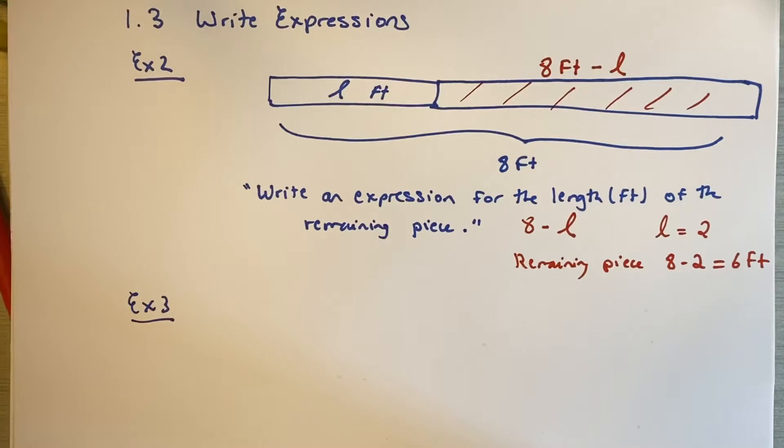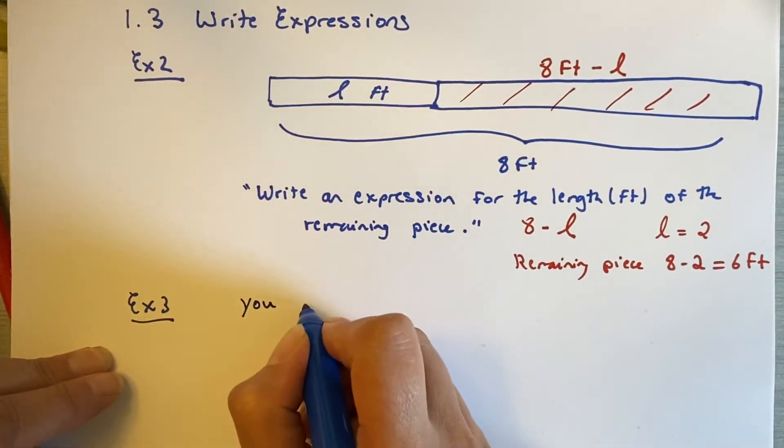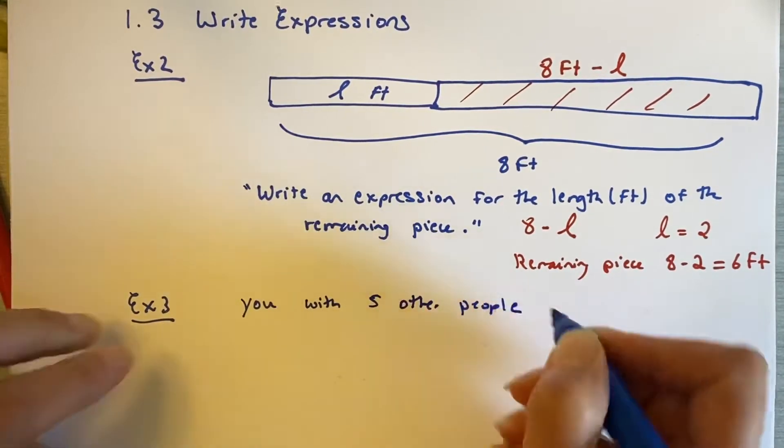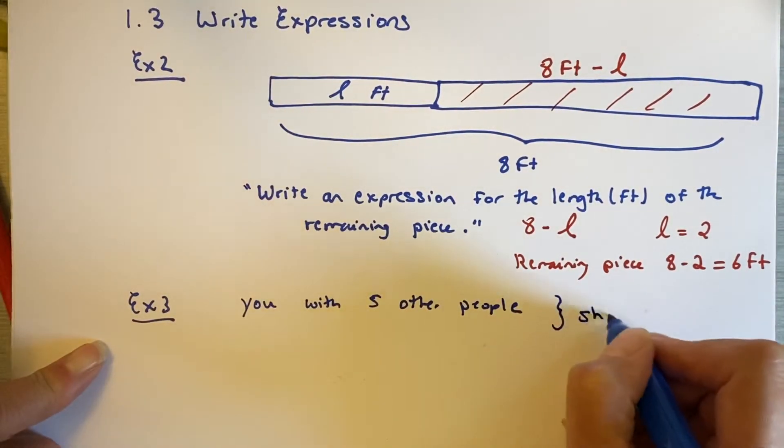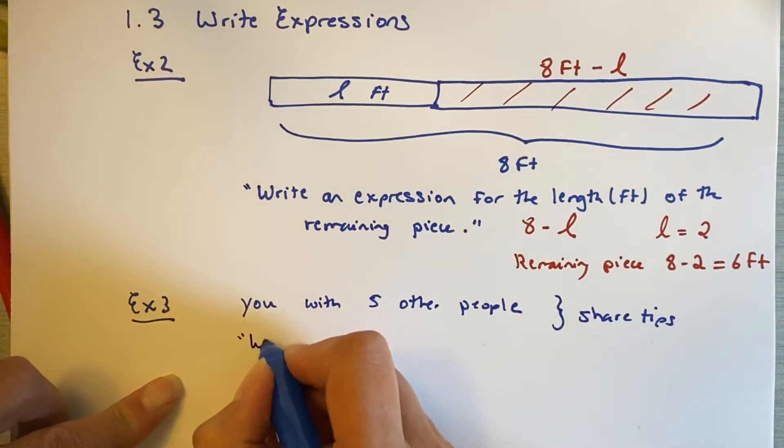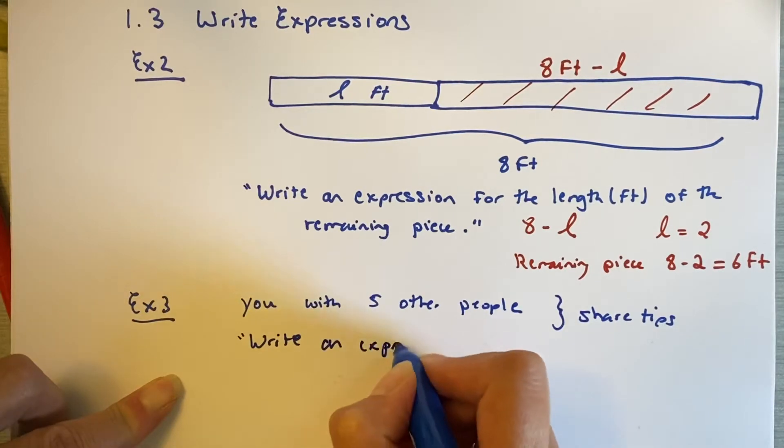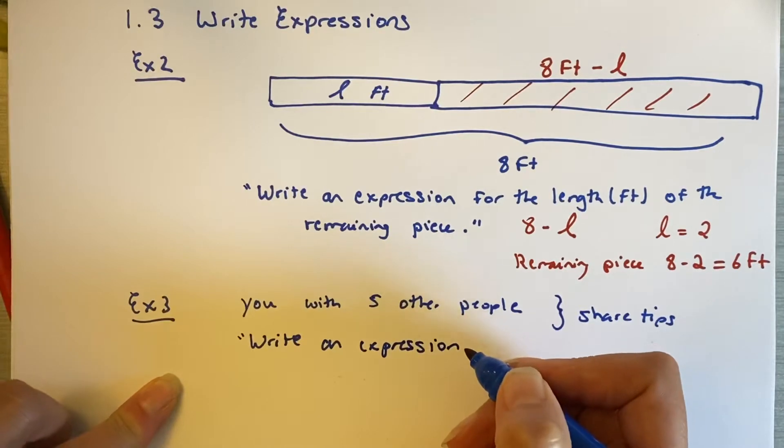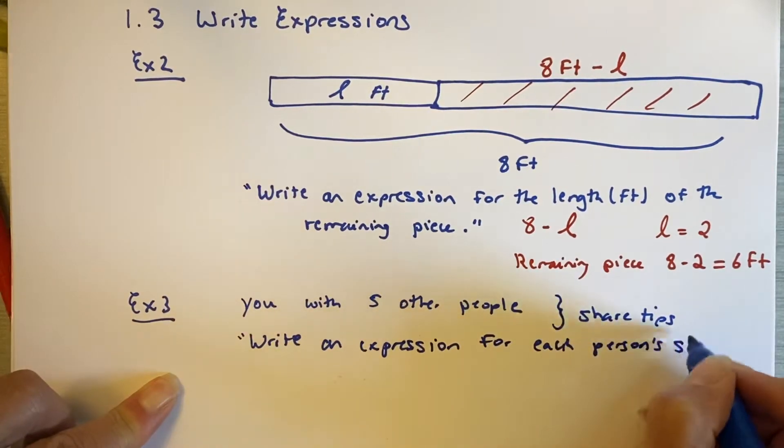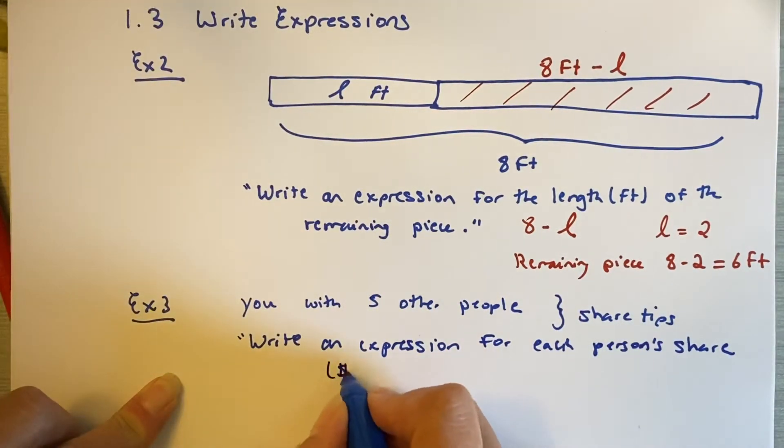Okay, let's go to exercise three. You work with five other people at an ice cream stand. All the workers put their tips into a jar and they share the amount in the jar equally at the end of the day. Write an expression for each person's share in dollars of the tips.